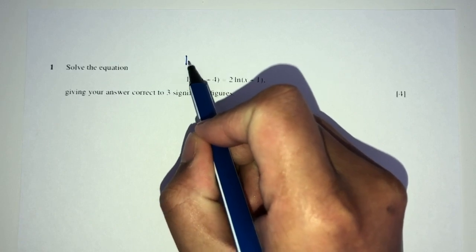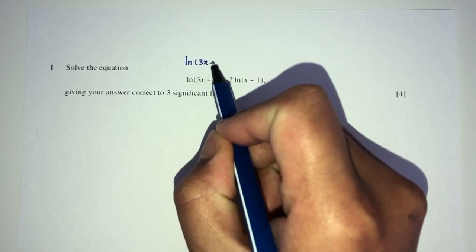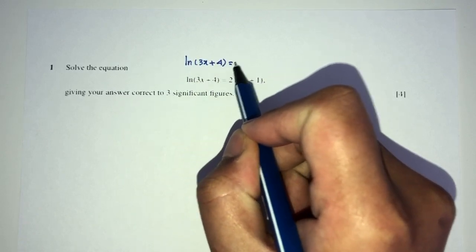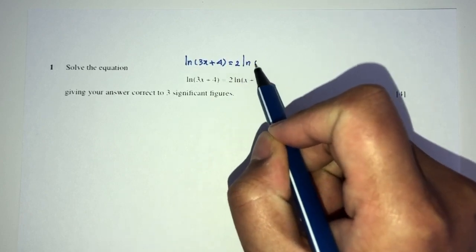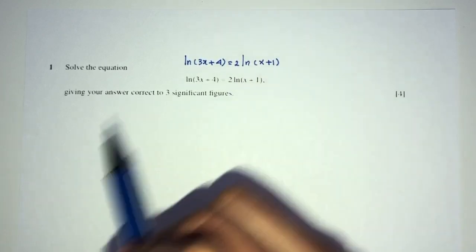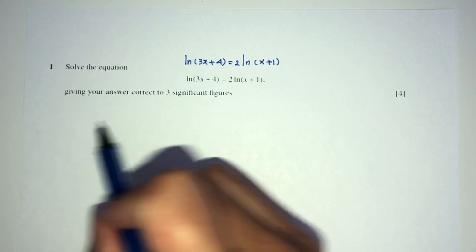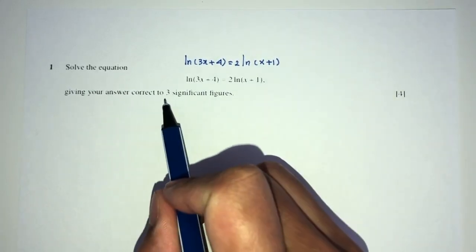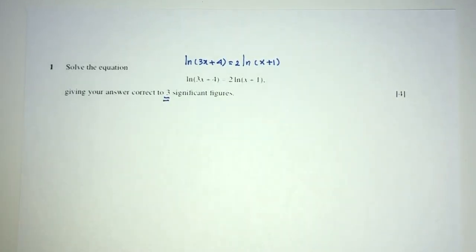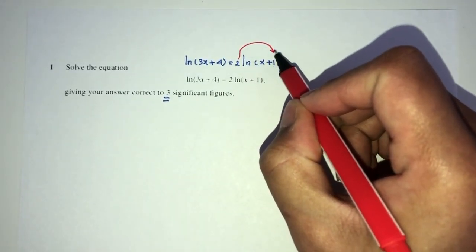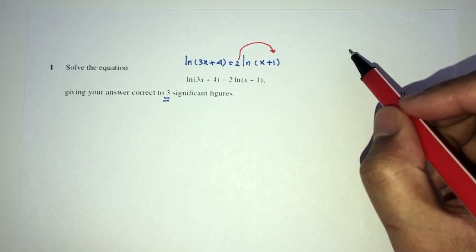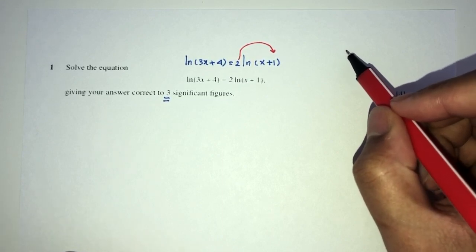Let's move on to question number 1. Here we have ln(3x + 4) equals 2 ln(x + 1). We have to find the value of x, which is the unknown, correct to 3 significant figures. So how would you find that? First we have to simplify. Let's send this one on top as the power. We should know that as the law of logarithms, we can do this.